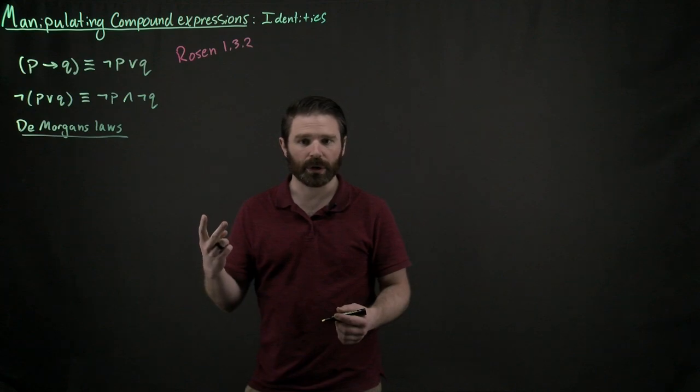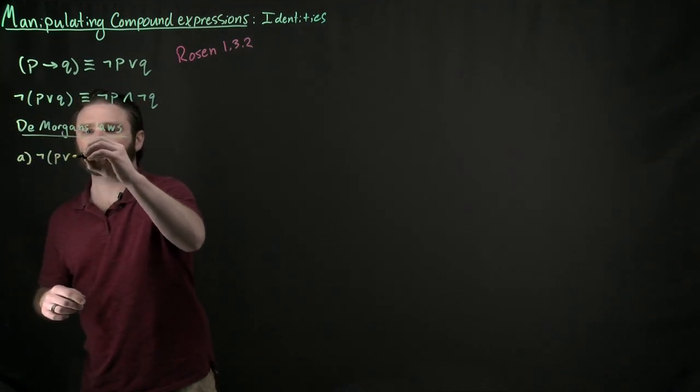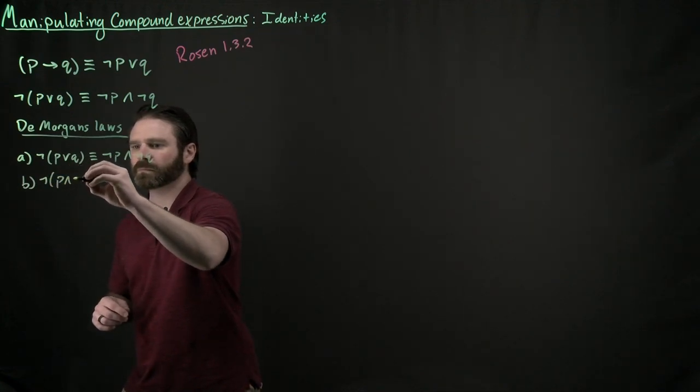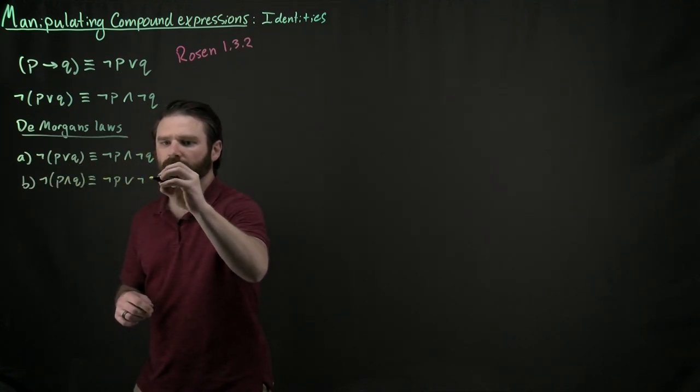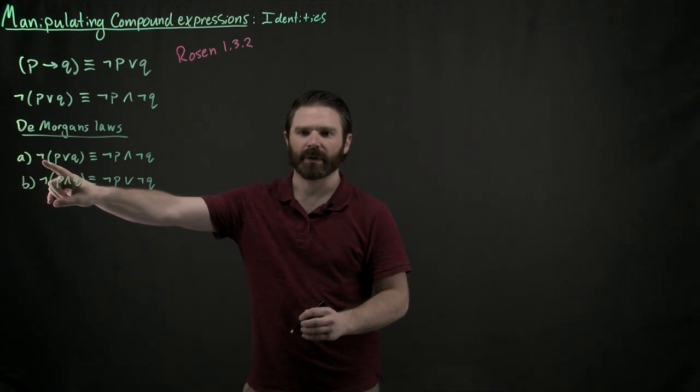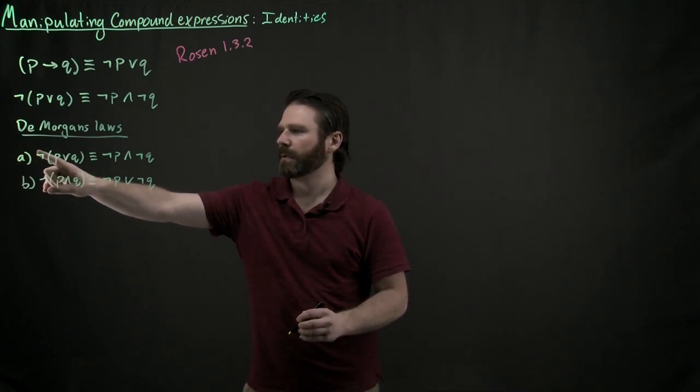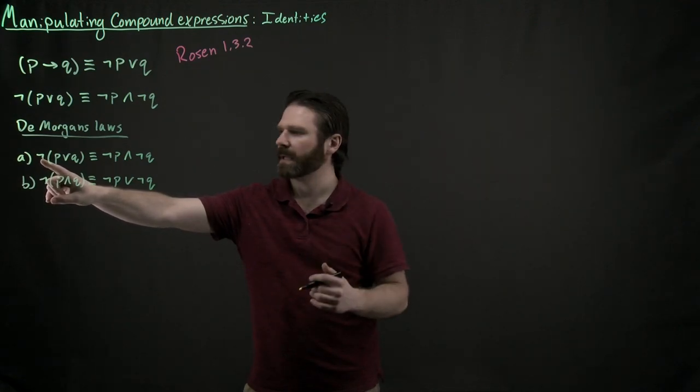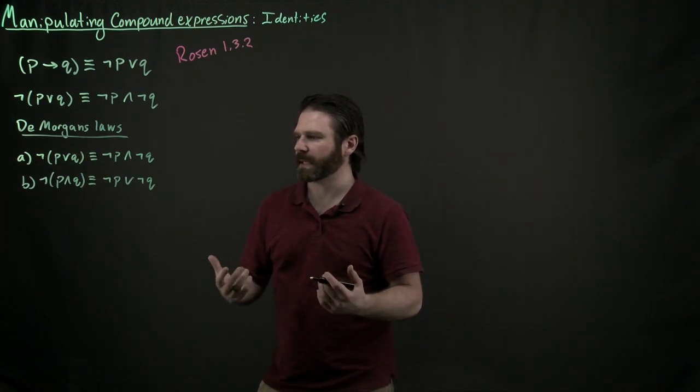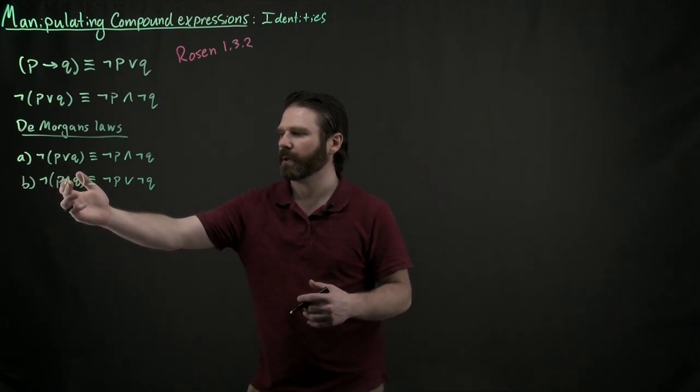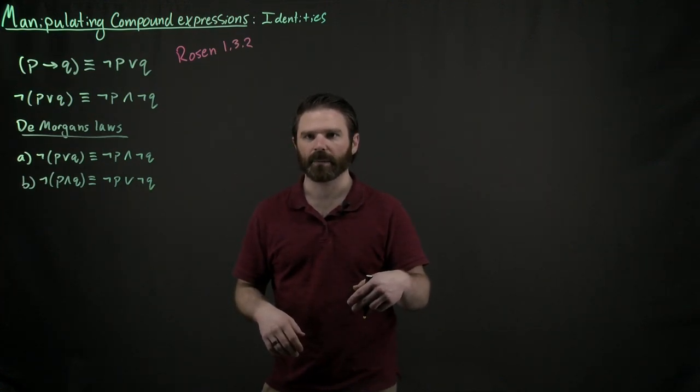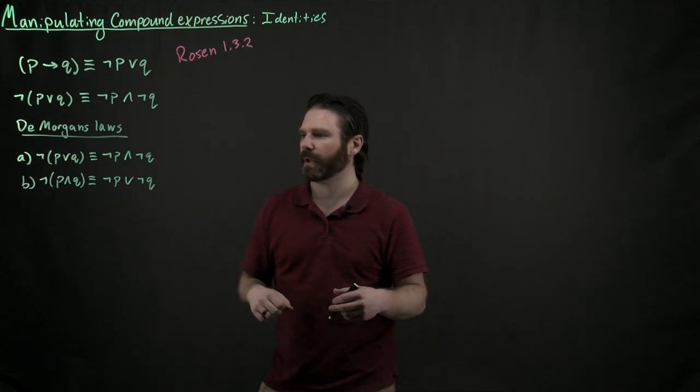So there are two DeMorgan's Laws and they say this right here. Because we remember from precedence of operators that this not right here has top precedence, it tells you how to have that interact with ands and ors. And basically the way that you were to distribute a not into an expression, you put that not on each one of the variables and you just flip the and to the or, or the or to the and. And it's pretty easy to verify this with a truth table if you wanted to.